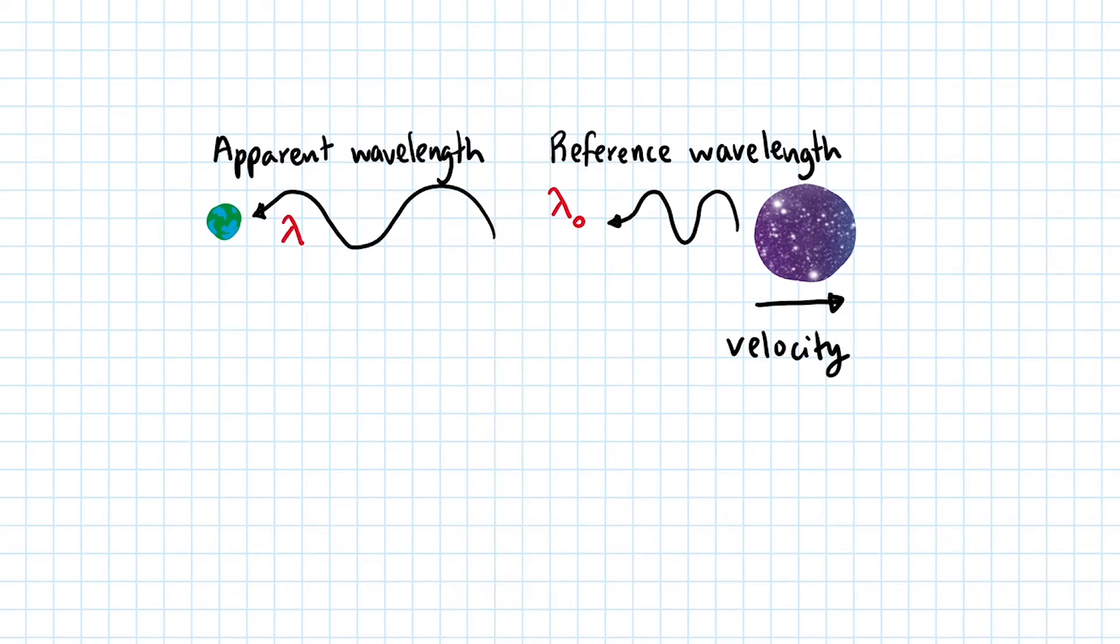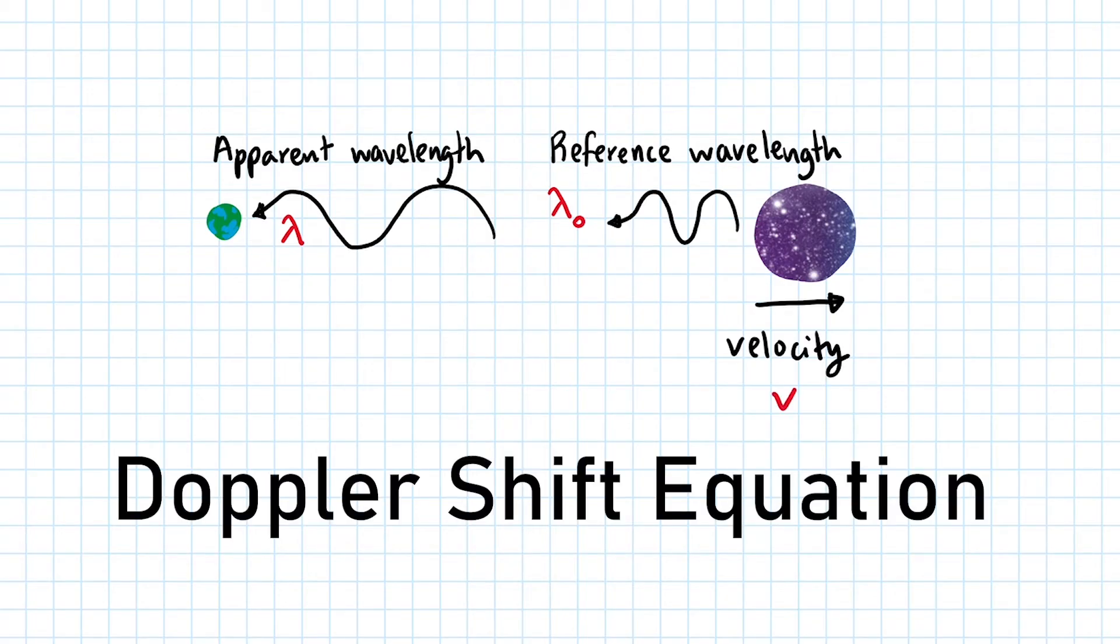We give it a symbol lambda. By observing how much the wavelength shifts by, we can figure out the velocity that the star is travelling with. We assign a symbol V to this velocity. And now we need the Doppler shift equation.